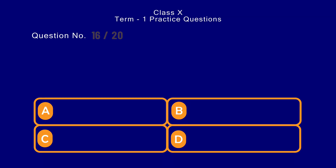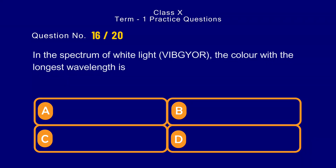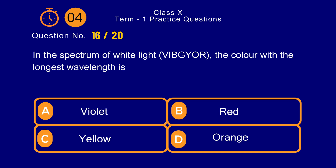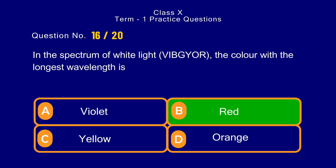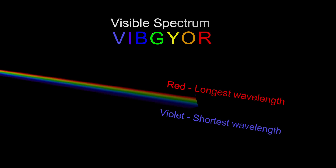Question number 16. In the spectrum of white light, the color with the longest wavelength is — options: a) violet, b) red, c) yellow, d) orange. The correct answer is option b) red. The red color has the longest wavelength in the spectrum.